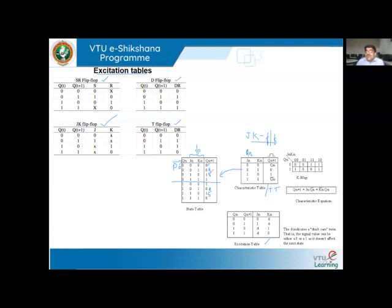We need this elaborated characteristic table — also called a state table — in order to derive the excitation table. The state table tells us: if we know the previous output and the input, we can determine the next state output.